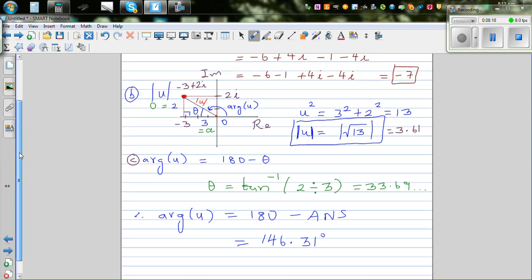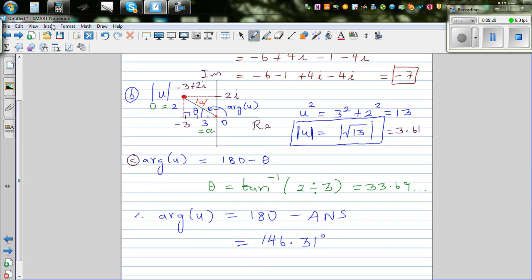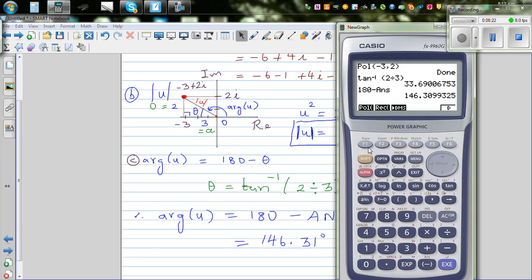How will you check this again? Calculator will directly give you this angle. You go polar form, the x coordinate is minus 3 and the y coordinate is 2. Can you see, this is 146.31, and this is the radial distance.